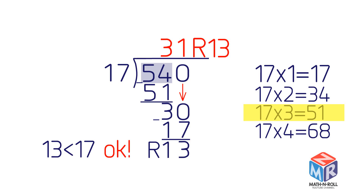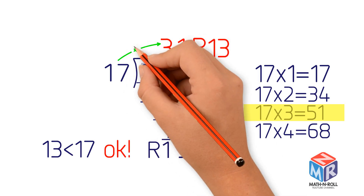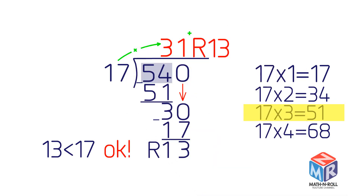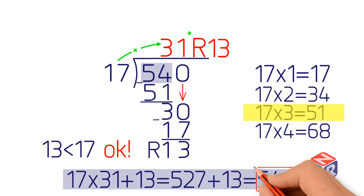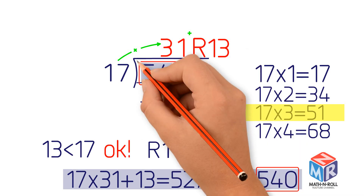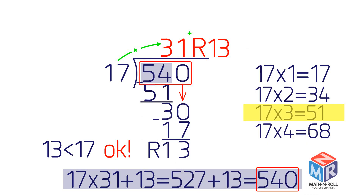The answer is 31, with the remainder of 13. Let's check the answer. 17 times 31 plus 13 equals 527 plus 13, which equals 540. It's correct.